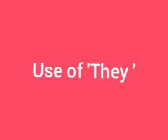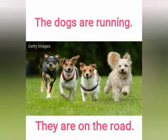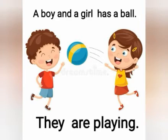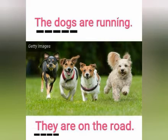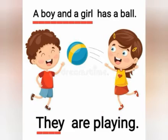Use of 'they'. We use 'they' with plural nouns like animals and people. For example: 'The dogs are running. They are on the road.' A boy and a girl have a ball — they are playing. Instead of 'the dogs', we can use 'they'. Similarly, instead of 'a boy and a girl', we use the pronoun 'they'.